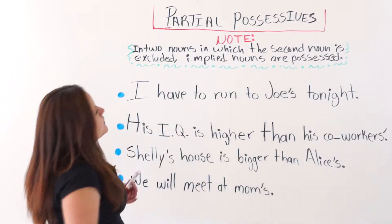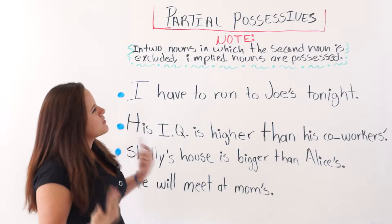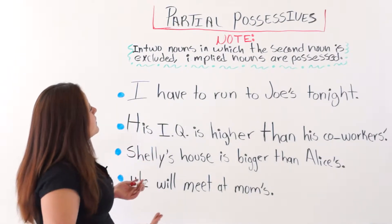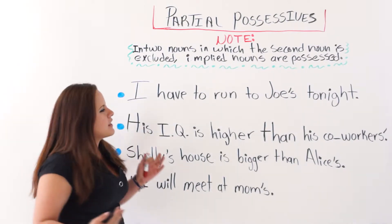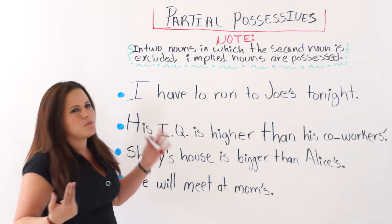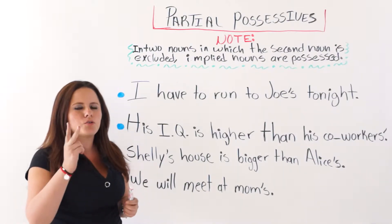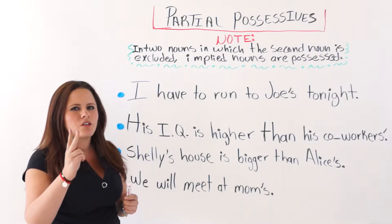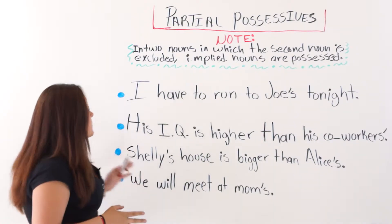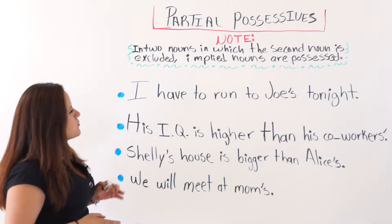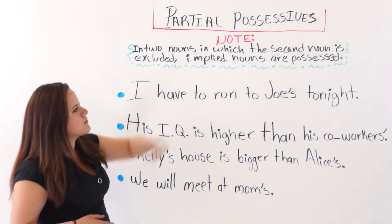I tried to give you a definition in the notes section. In two nouns in which the second noun is excluded, implied nouns are possessed. This means that a partial possessive is composed of two nouns in which the second noun is excluded.